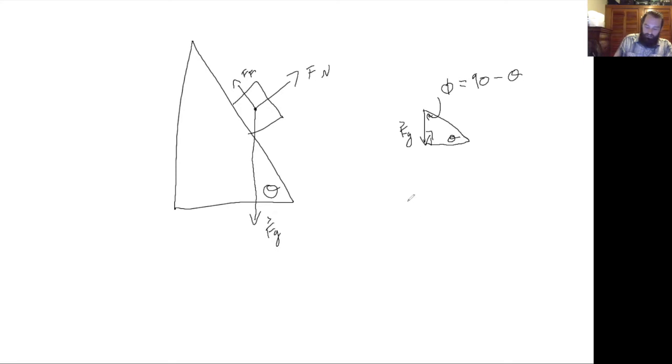So now I have the gravitational force pointing down. If I want the x and y components of that gravitational force, I would need another right triangle. So now with gravitational force as the hypotenuse...